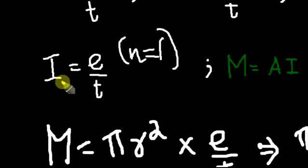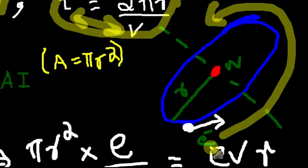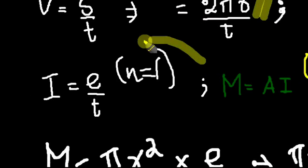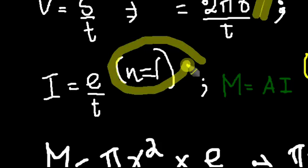So we know that current is equal to charge by time, charge flowing through a particular area by time. I am using that equation right here. So here the number of electron I am using is one electron. I am using the n equal to 1 so that we can find the one Bohr magneton. So I am using one electron.